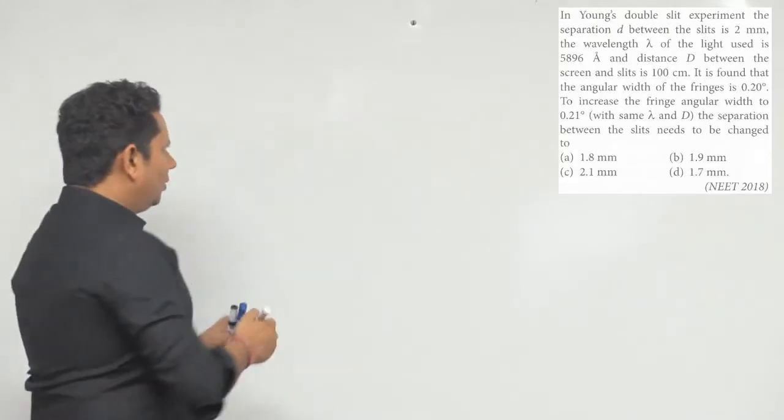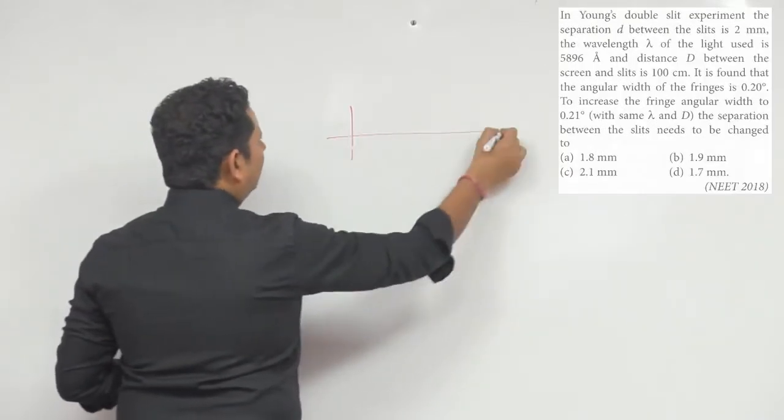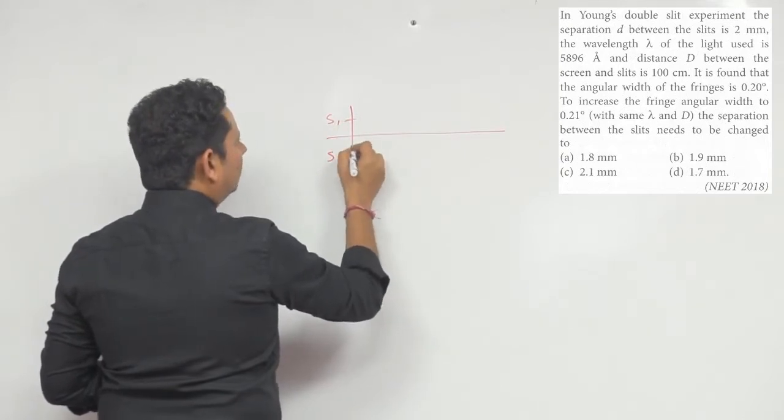If we talk about YDSE setup, you have a slit 1 and slit 2.